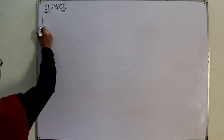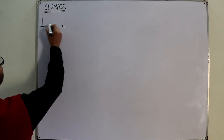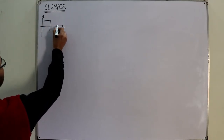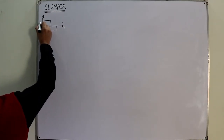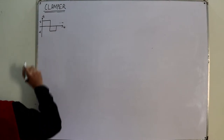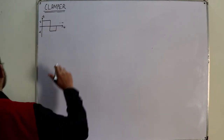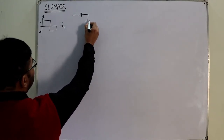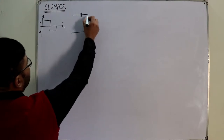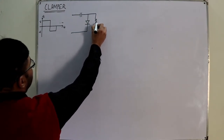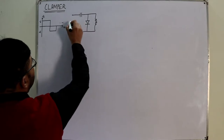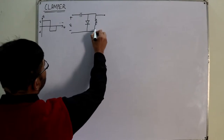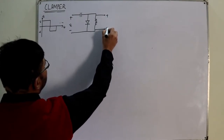We are given a square wave as the input. This is the time axis T and this is the input voltage. A square wave is given that repeats, having a plus V here and a minus V here. The circuit is given such that you have a capacitor here, a diode here, a load resistor here, with plus-minus input and plus-minus output.